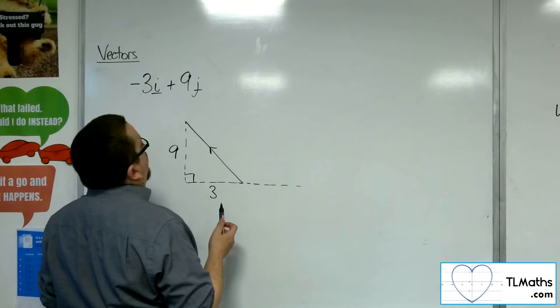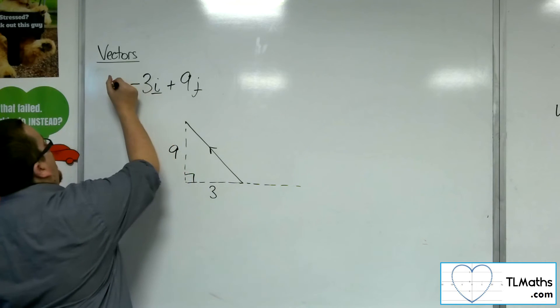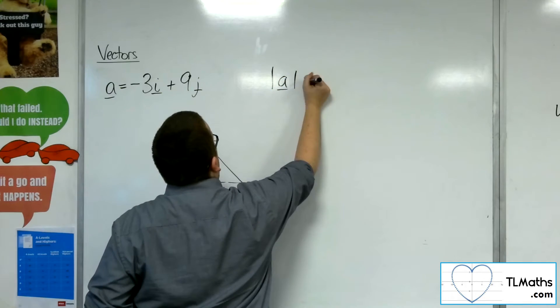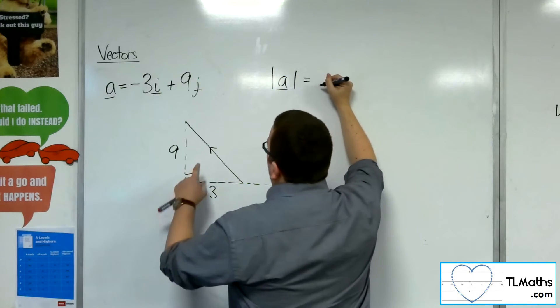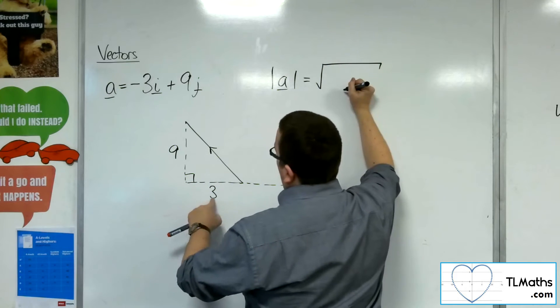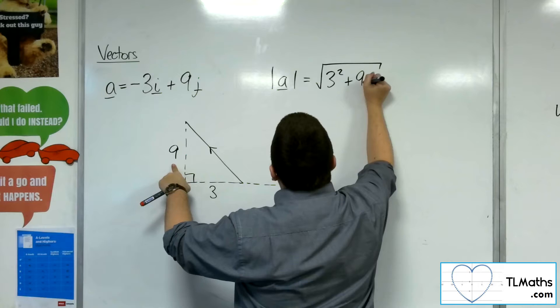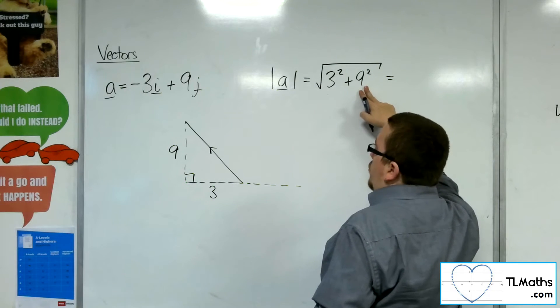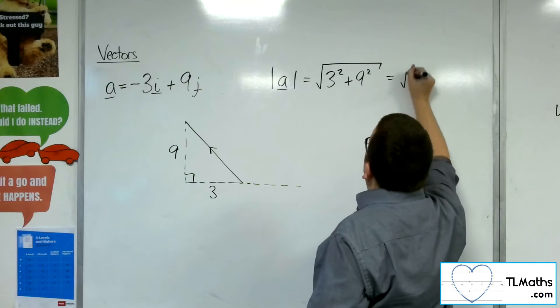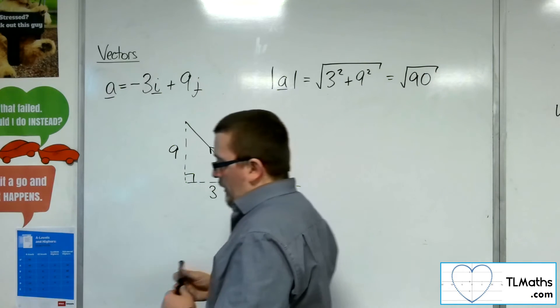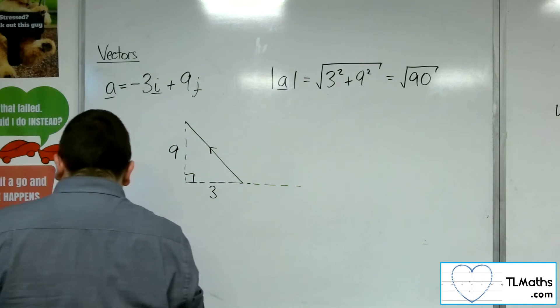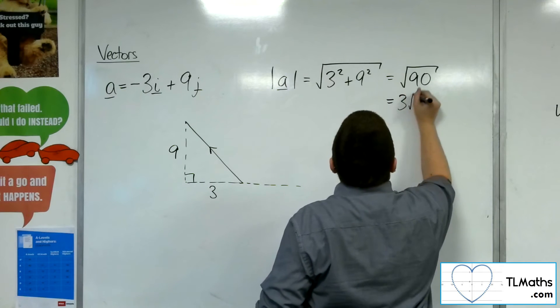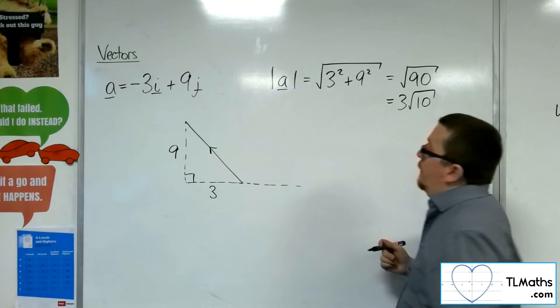So I first of all want to find the magnitude. So if we call this vector a, then the magnitude of a will be, using Pythagoras, the square root of 3 squared plus 9 squared. So what's that? Well, that's 9 squared is 81 plus 9, so square root of 90. OK, so square root of 90 simplifies to 3 root of 10. OK, so that's the vector's magnitude.